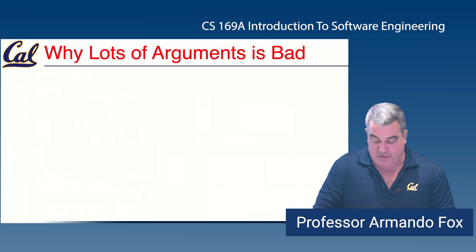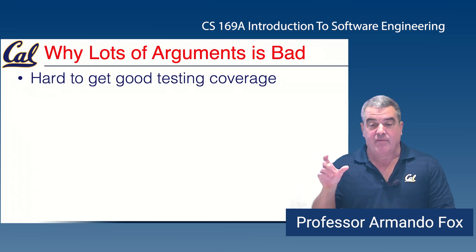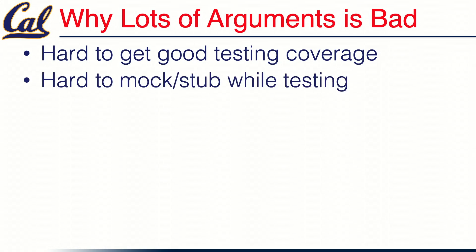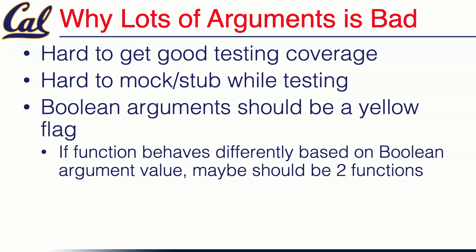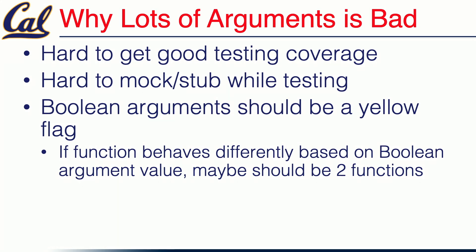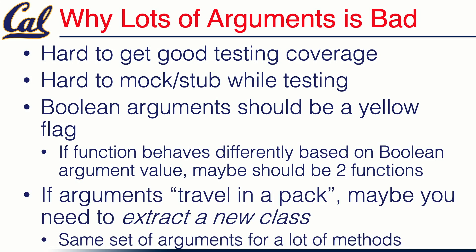Getting back to why lots of arguments is bad: if the arguments really are controlling behaviors in the function, it's harder to get good test coverage because you have to exercise all the different code paths corresponding to different permutations of argument values. It also makes mocking and stubbing harder — if each argument is an object whose methods are called by the code under test, you have to create quite a bit of setup. Boolean arguments should be a yellow flag: they probably mean you really have two different methods. And if arguments always travel together, you may need to extract a class with those arguments as its attributes and pass instances of that class around.